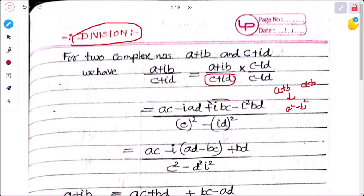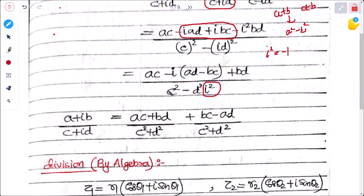Taking i common from the middle terms gives i(ad − bc). Since i² = −1, the term −i²bd becomes +bd. The denominator simplifies to c² + d², since i² = −1 makes −(id)² = +d².